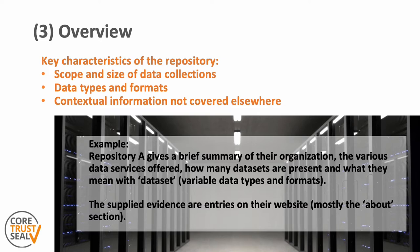The third part is an overview of the repository — key characteristics like the scope and size of data collections, the data types and formats — and this should reflect the selected repository type. The only change from before is that other relevant information is now included here, so the overview can include contextual information not covered elsewhere in the requirements. For example, the repository can give a brief summary of their organization, the various data services offered, how many datasets are present and what they mean by datasets. The supplied evidence are entries on their websites, for example in the about section.